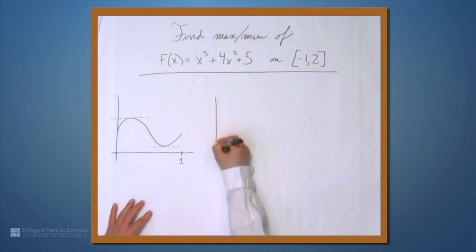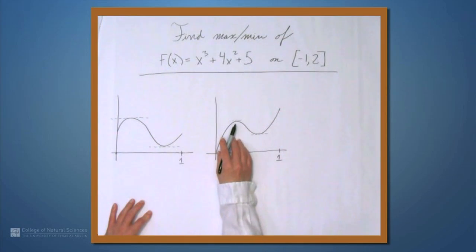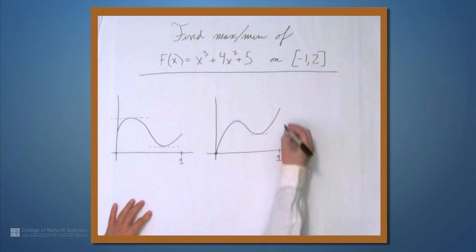But, what if we have something like this instead? Here, we still have places where the derivative is 0, where the tangent line is horizontal, but the minimum value occurs here at the endpoint, and the maximum value occurs here at the other endpoint.